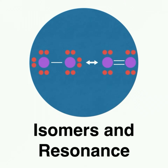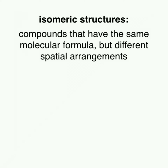In this lesson, we'll take a look at isomeric structures and resonance structures, identifying the difference between the two. Structures that are isomers of each other have the same molecular formula but different spatial arrangements. This means the atoms within the molecule are in different locations.